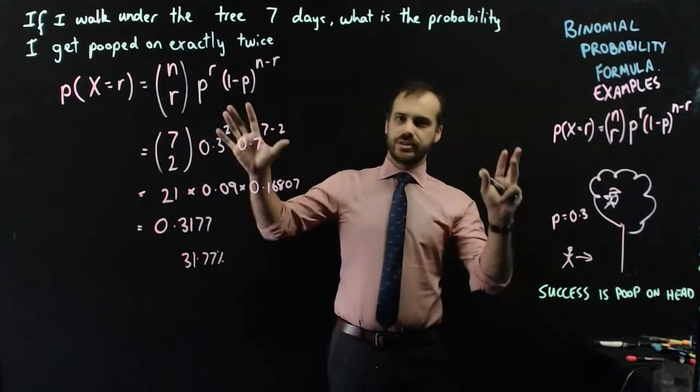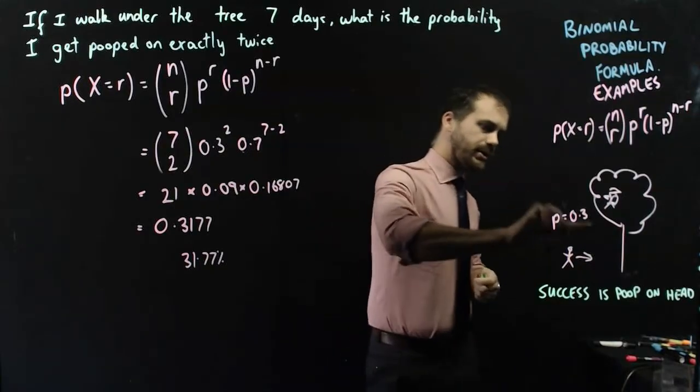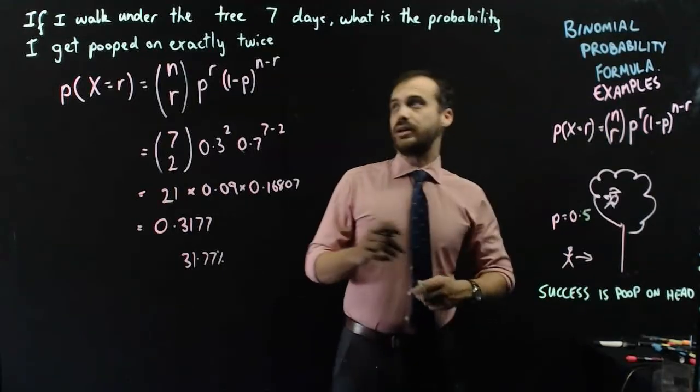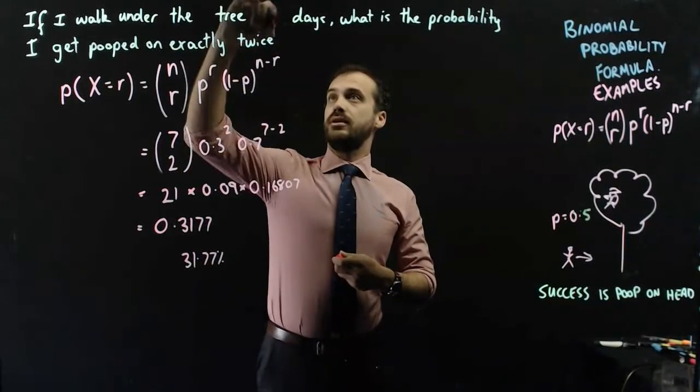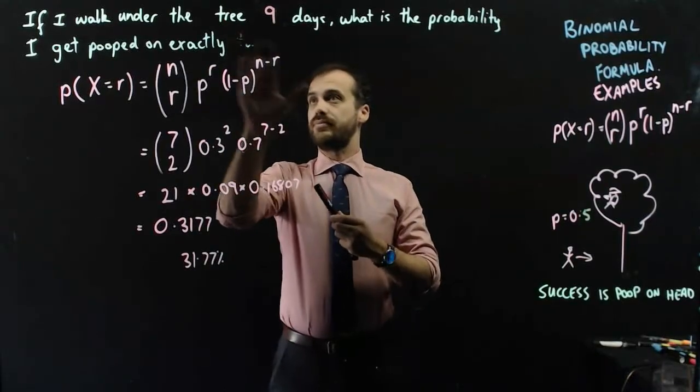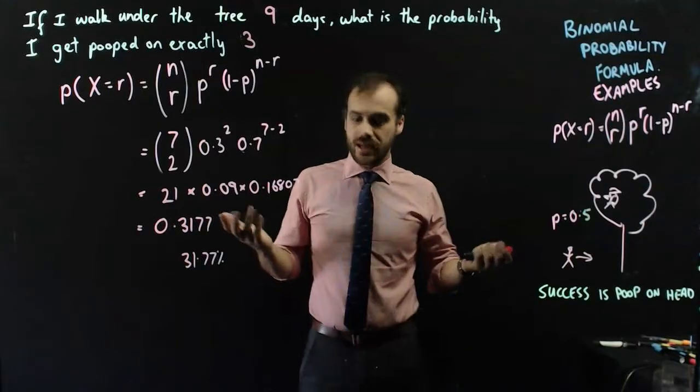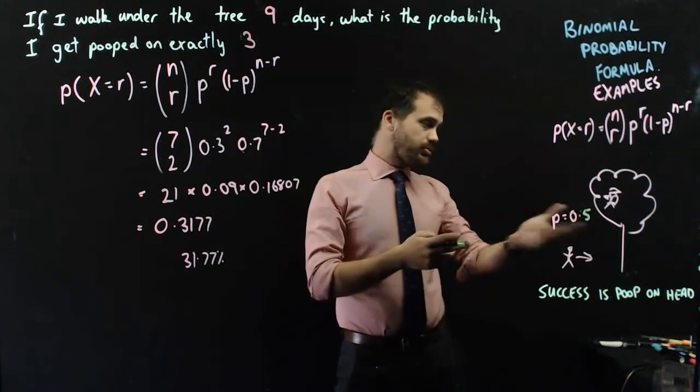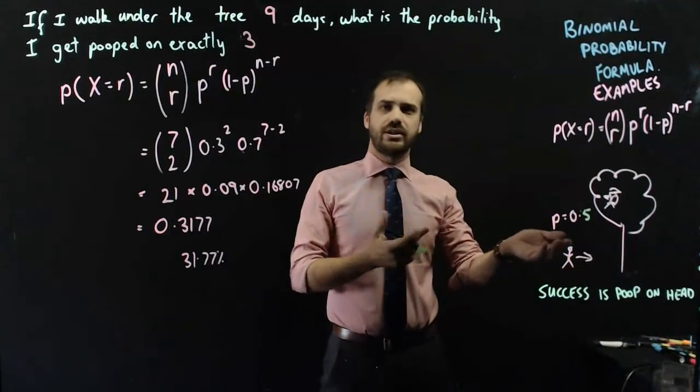Now I can run through 100 examples that are exactly like this, but that's it. I could change the probability to 0.5, let's say, and I could say if I walk under the tree 9 days, what is the probability that I get pooped on exactly three times? If the question was that, then we just replace all of our numbers. And it doesn't need to be a tree, it could be - in this case 0.5 is like a coin.